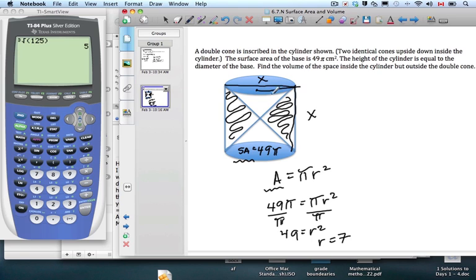So there's our radius. So does that help us with other things? It does, because now I know that x is going to be twice the radius, which is 14. The diameter is 14. Well, so what's the height of one of those cones going to be then? If they're both identical, then they've got to be split in half. This has got to be 7.